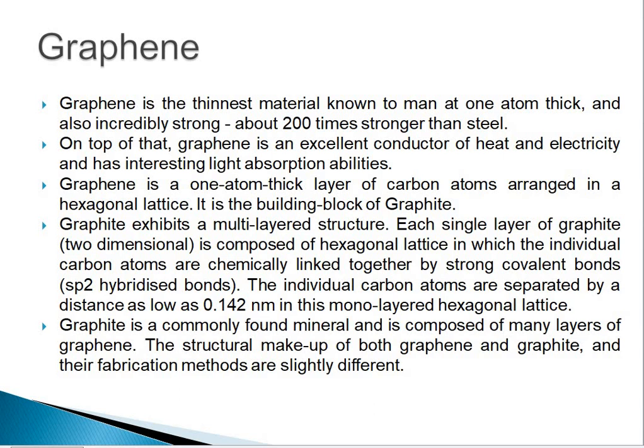Graphene is the thinnest material known to man, at one atom thick, and also incredibly strong — about 200 times stronger than steel. On top of that, graphene is an excellent conductor of heat and electricity and has interesting light absorption abilities. Graphene is a one-atom-thick layer of carbon atoms arranged in a hexagonal lattice. It is the building block of graphite.